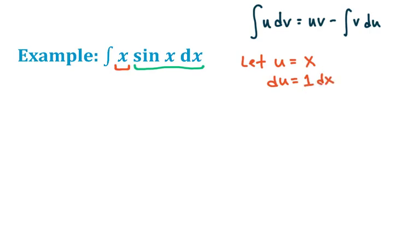If we had chosen sine of x for u, the derivative would have then been cosine, which isn't any simpler feeling than sine, right? So now we'll just talk about dv. The original integral has to be the product of u and dv. So since we already let u be x, that means dv is sine of x dx.